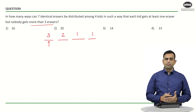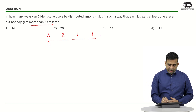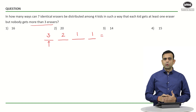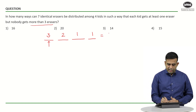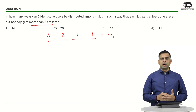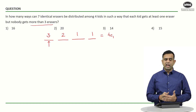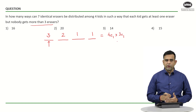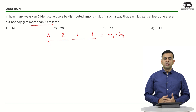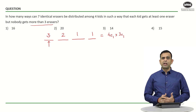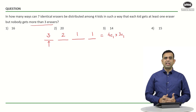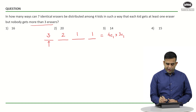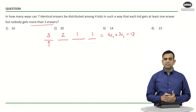Now we need to find the number of cases for Case 1. One person gets three — I can choose that person in 4C1 ways. Then one more person receives two erasers — I can choose that person in 3C1 ways. The remaining two people each get one eraser, so no further selection is needed. So the count for Case 1 is 4C1 × 3C1 = 4 × 3 = 12 cases.